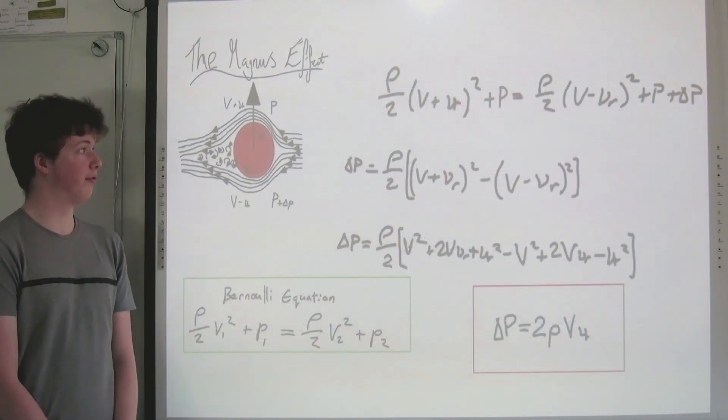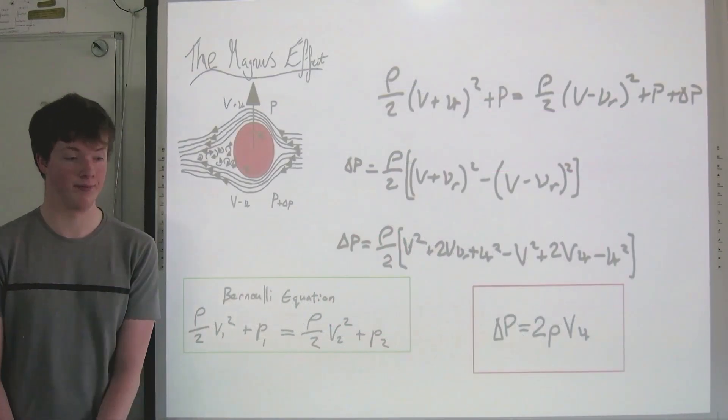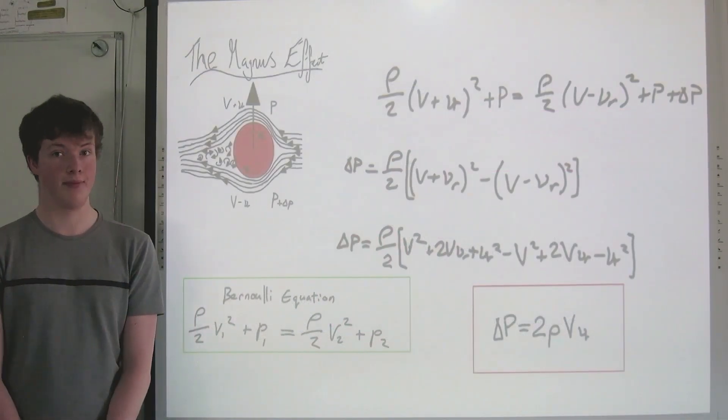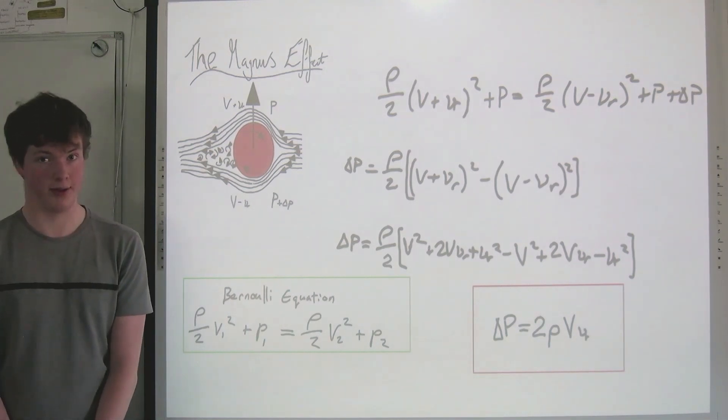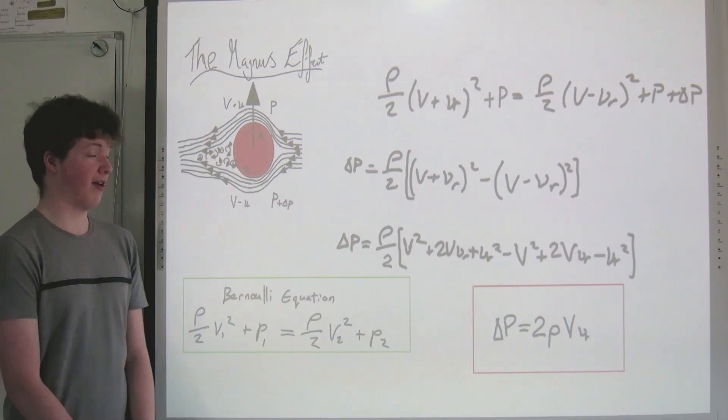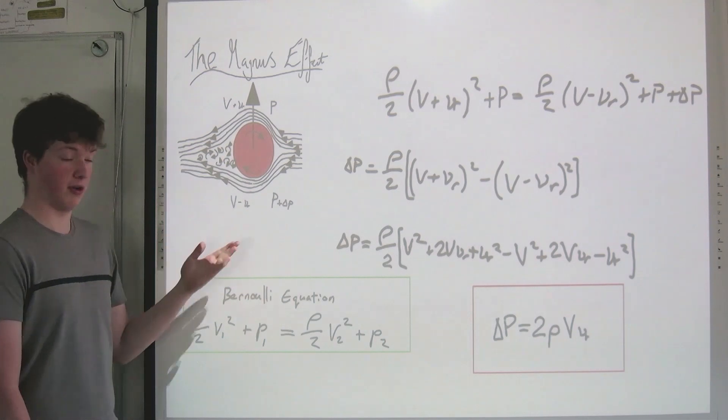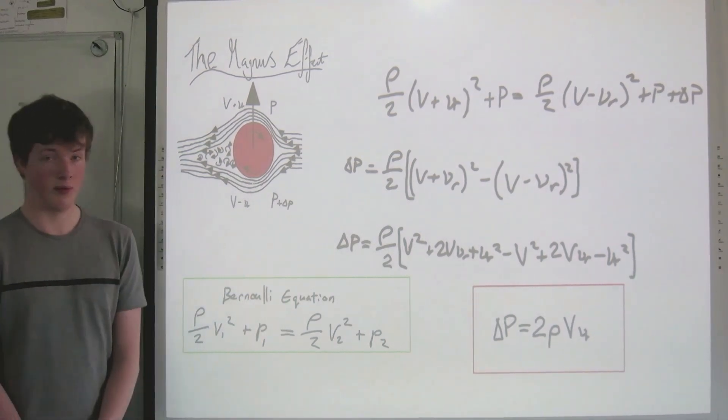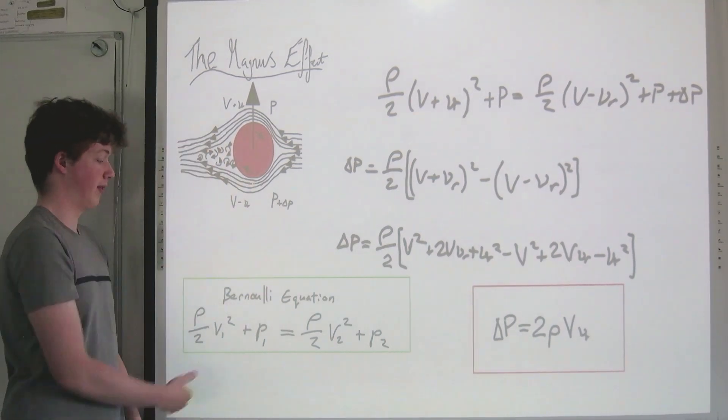To find the magnitude of the force exerted by the pressure differential, we first need to consider the sphere as a cylinder of infinite length. This effectively reduces the problem from three dimensions to two. We then need to substitute our values found in the diagram into the Bernoulli equation.